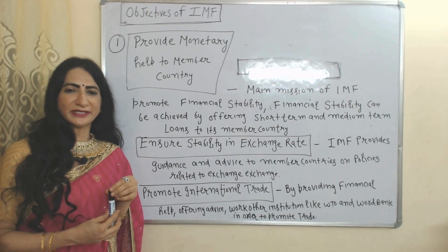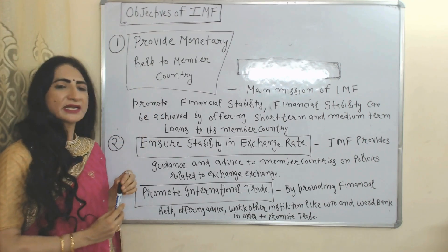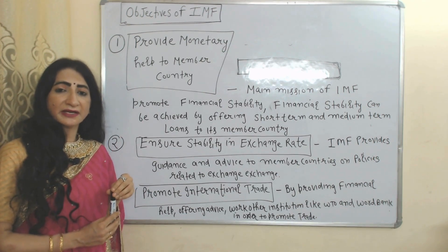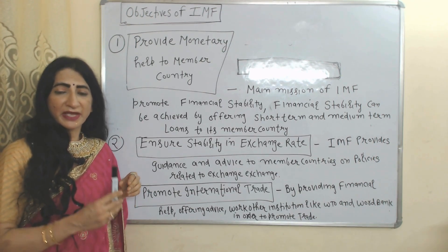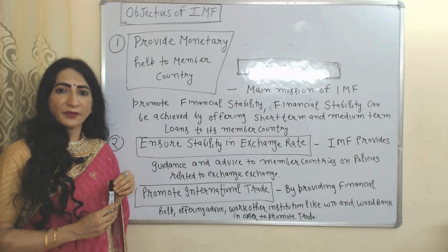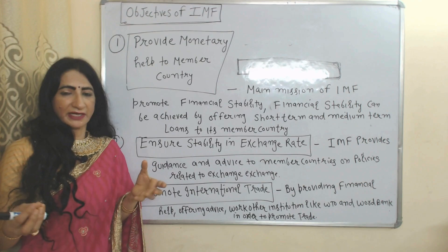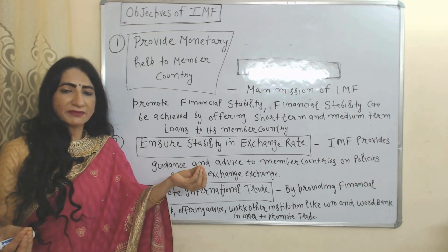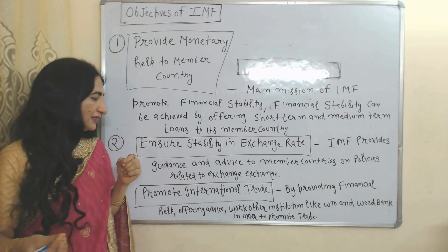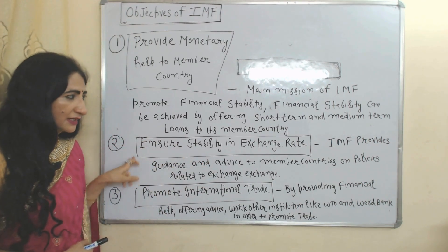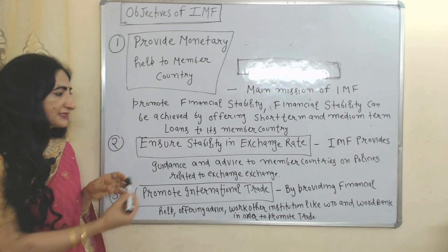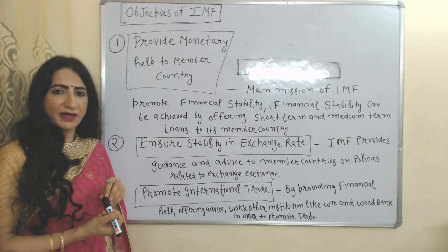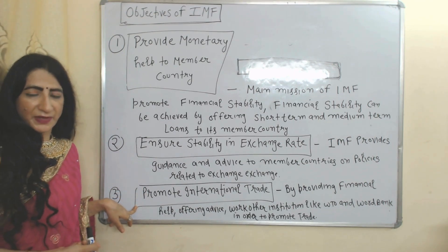Now we talk about the objectives of the IMF. First: provide monetary help to member countries — IMF provides short-term and medium-term loans to member countries to achieve financial stability. Second: ensure stability in exchange rates — IMF provides guidance and advice to member countries on policies related to exchange rates.